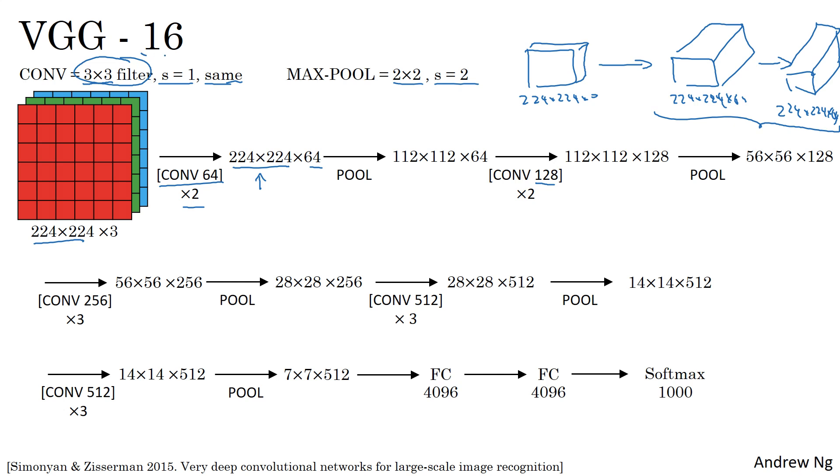By the way, the 16 in the name VGG-16 refers to the fact that this has 16 layers that have weights. This is a pretty large network. This network has a total of about 138 million parameters. That's pretty large, even by modern standards. But the simplicity of the VGG-16 architecture made it quite appealing.